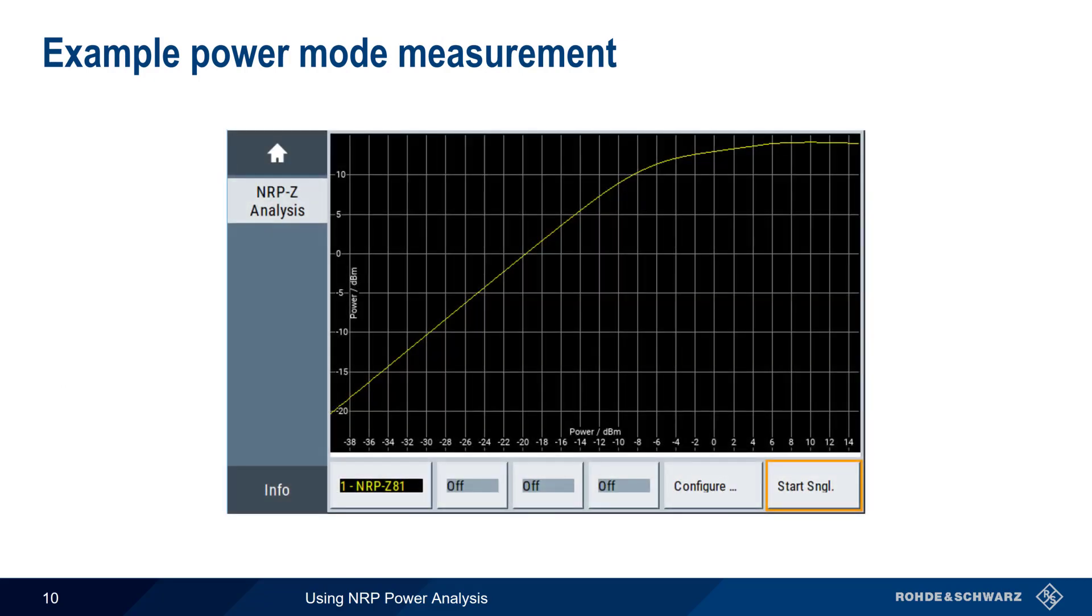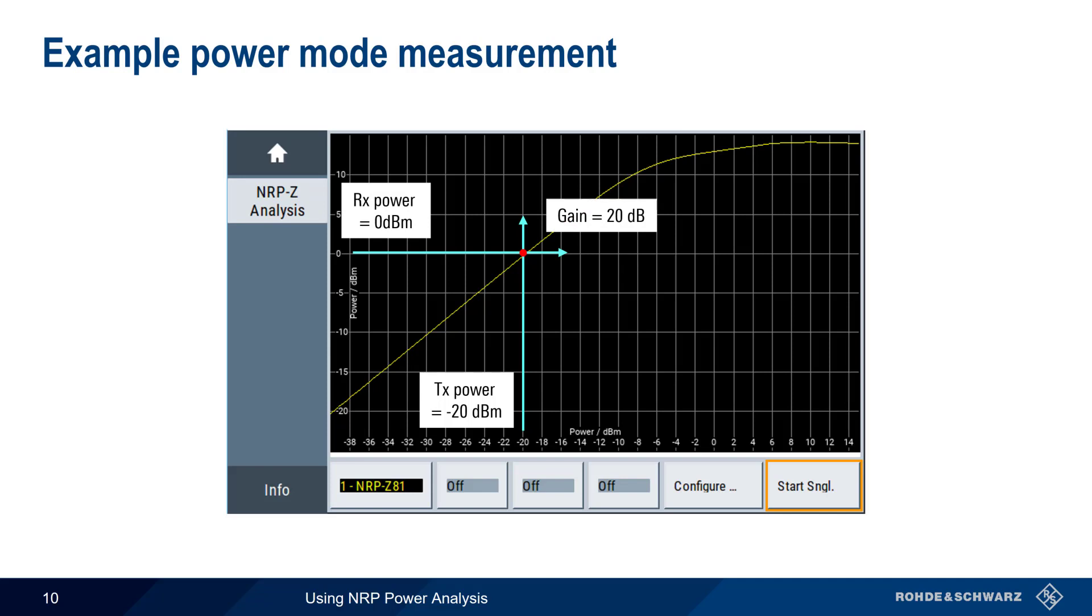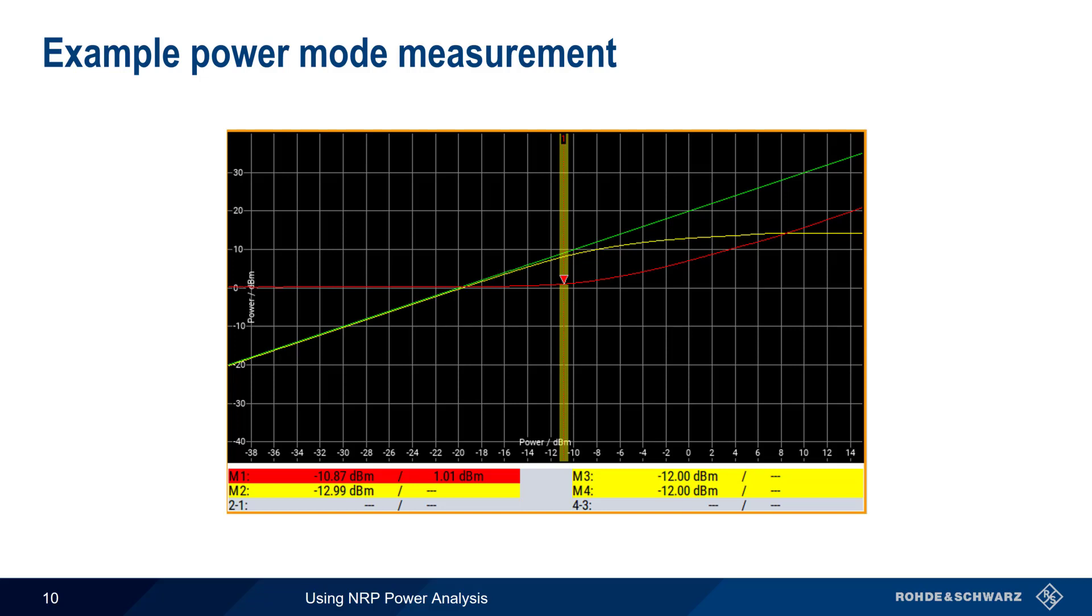Amplifier gain in the linear region can easily be read off this graph. Here, for an input power of minus 20 dBm, we have an output power of 0 dBm, meaning our amplifier is providing about 20 dB of gain. We can also compute the 1 dB compression point using a combination of reference and math traces, as well as markers. Here, our P1 dB is minus 10.87 dBm.